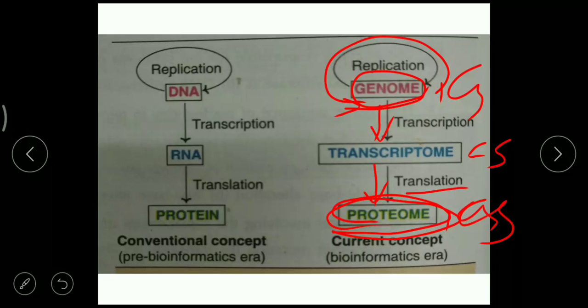Metabolomics uses genome sequence analysis — sequencing the A, T, G, C bases — for determining the capacity of a cell, tissue, or organism to synthesize small molecules called metabolites. This use of genomic sequences to determine the capacity to synthesize small molecules is called metabolomics.